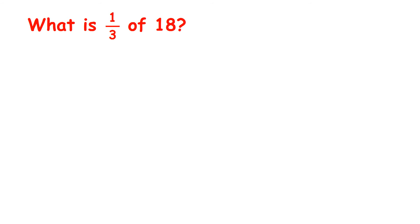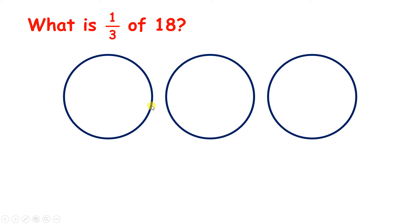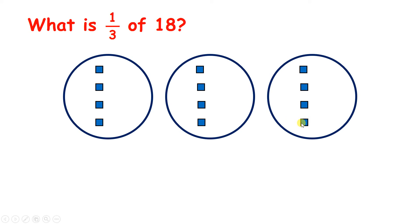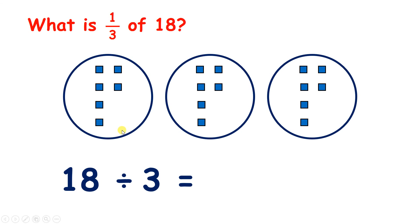Again, we could have found a third by sharing between 3. So if we share 18 between 3 circles, we count out 1 through 18 across the 3 groups. So we have 6 in each circle. So 18 divided by 3 is 6.